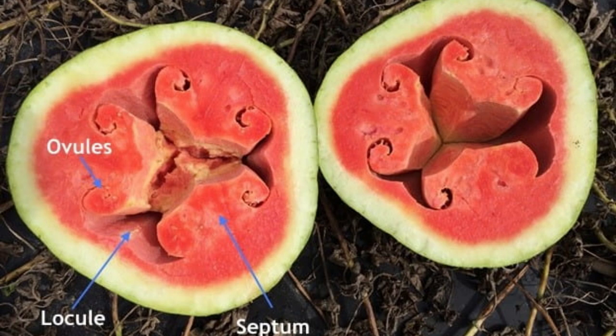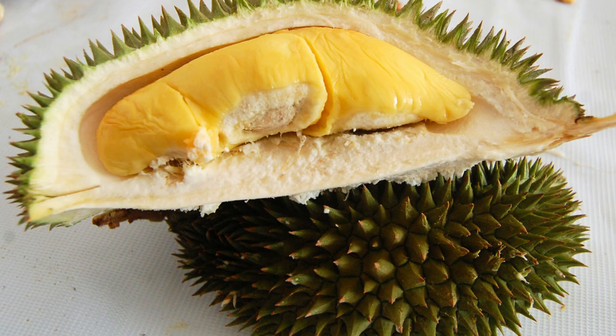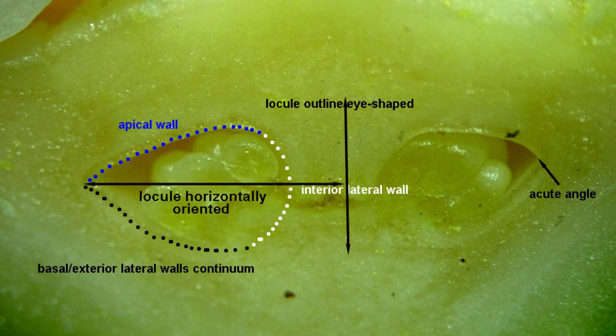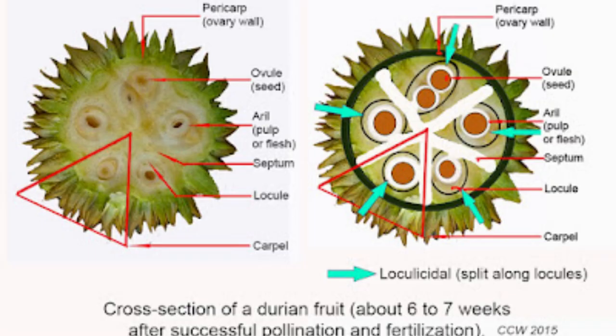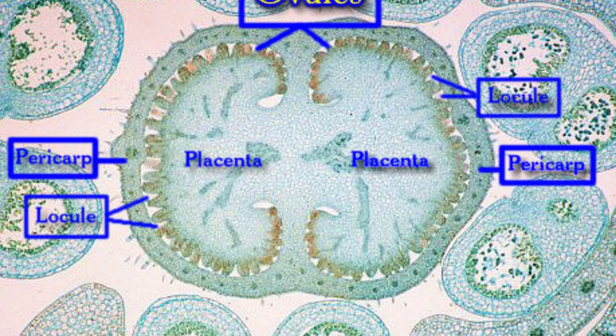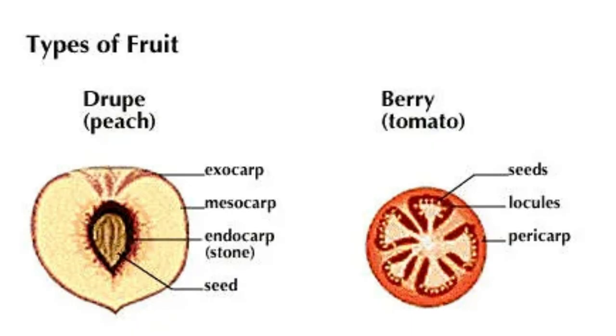In conclusion, locules play a crucial role in the survival and reproduction of plant species, serving as a site for the production of pollen, the development of seeds, and the storage of essential nutrients and energy sources. Understanding their importance, uses, advantages, and disadvantages are essential for effective plant management and conservation efforts, as well as for improving our overall understanding of the natural world.